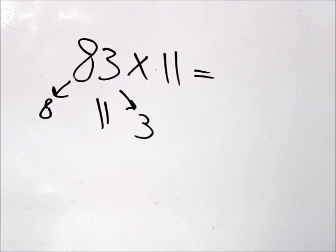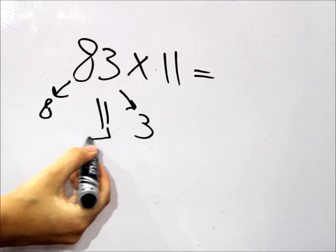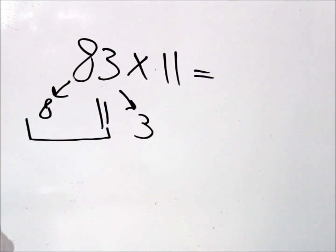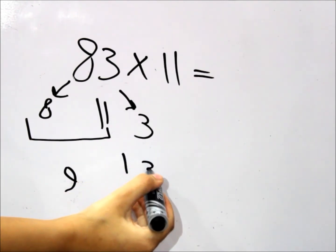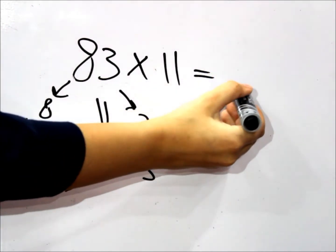Rationally, this number is too big to be the answer. So what do we do in such a case? We take these two digits and add them up. So the actual answer would be 9, and then just the 1 and the 3. So the answer is 913.